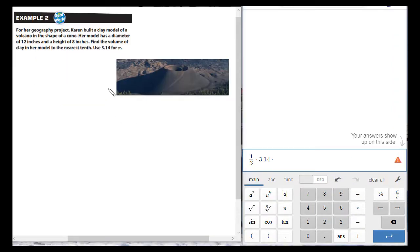Okay, we're just going to do one of these word problems here. Nothing about this lesson is terribly complicated. It's really just a matter of calculator exercise, and we're taking a look at example two. For her geography project, Karen built a clay model of a volcano, and the volcano was in the shape of a cone, and so when it's in the shape of a cone, I know I got to use the volume of a cone formula, which is one-third times πr² times height.